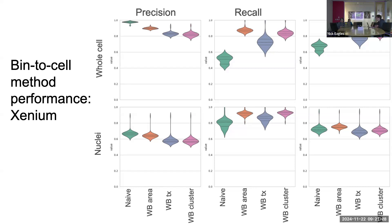Overall, weight by area performs best on the Xenium dataset, despite weight by transcript and weight by cluster being more sophisticated methods — which is interesting. That was one reason for making weight by area the default. It's worth noting that the pathologist segmentations were whole cells while StarDist gives nuclei, so there are different segmentation levels being compared, but the similar takeaway holds: weight by area is best.